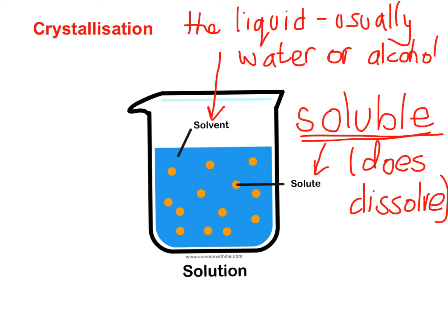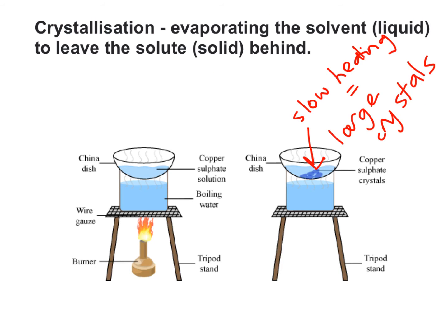We need to know how to separate the solvent from the solute in a solution, and we can use crystallization to do that. Crystallization is defined as the evaporating of the solvent — the liquid part — to leave the solute, the solid part, behind.